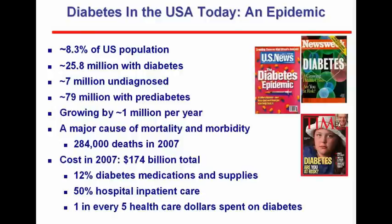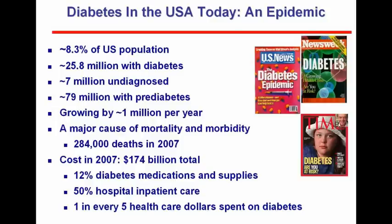About 8.3% of the population has diabetes — that's almost 26 million people. If you look at the global numbers, that's about 9%. There are about 7 million undiagnosed people in the United States, and about 70 million around the world. 80 million people in the U.S. have prediabetes, which means almost 800 million worldwide. Diabetes is growing by a million per year, and we all know it's a major cause of mortality and morbidity.